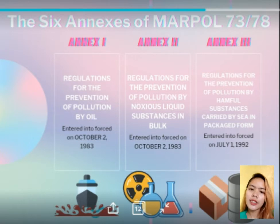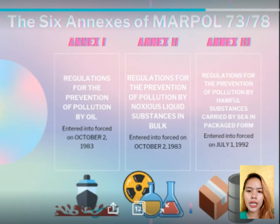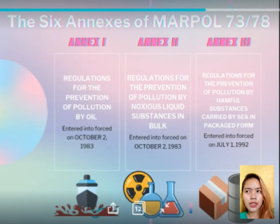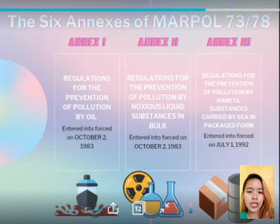The 1992 amendments to Annex 1 made it mandatory for new oil tankers to have double hulls and brought in a phase-in schedule for existing tankers to fit double hulls, which was subsequently revised in 2001 and 2003.